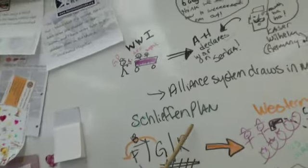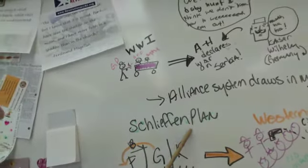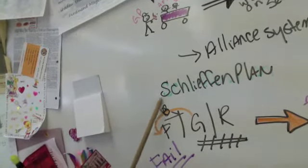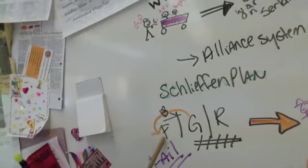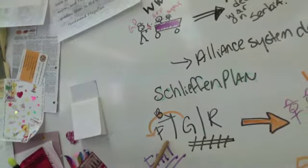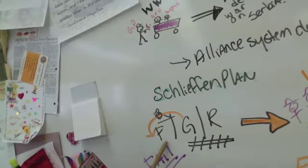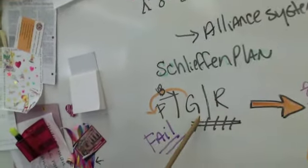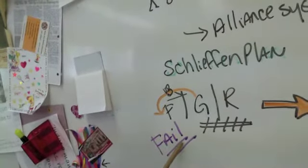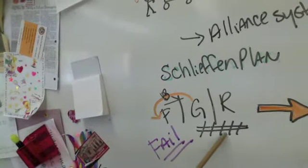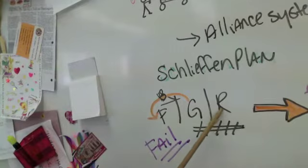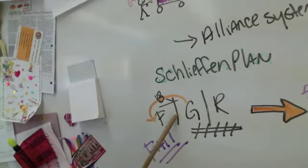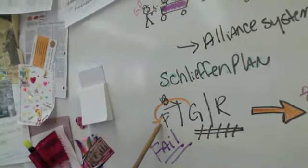The war actually starts with the Schlieffen Plan, which was Germany's plan to avoid a two-front war. They were going to sweep through Belgium, which was supposed to be neutral, and into France. Most of the French troops were on the German border. It was supposed to take Russia about six weeks to mobilize, but with railroads it only took two weeks. France was able to move its troops to the Belgium border. So it was basically an epic fail for Germany.